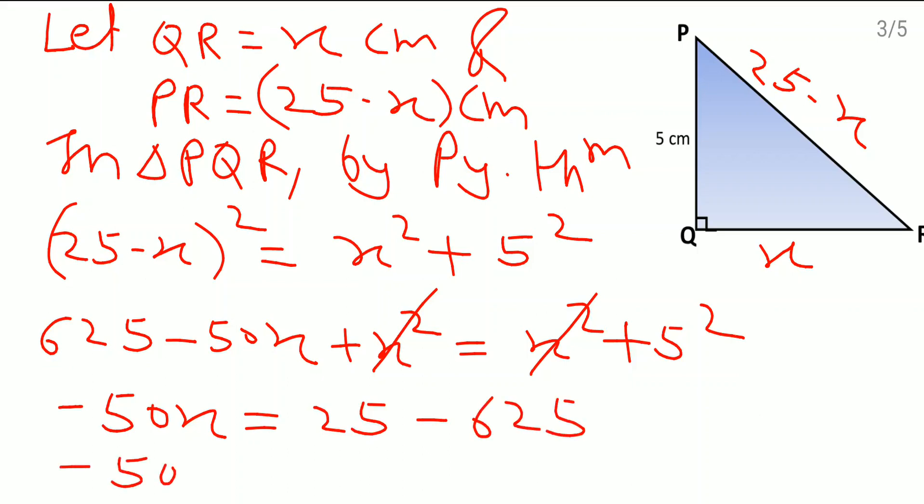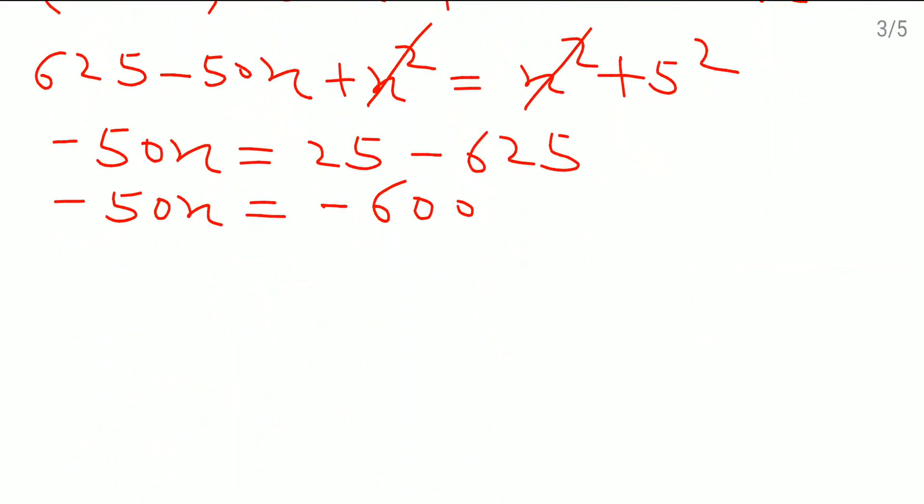Look at this here minus 50X as it is. After doing the subtraction we get here minus 600. Send this minus 50 that side. So X which is equal to minus 600 by minus 50. 0 and 0 got cancelled. This also got cancelled. 5 ones are and 5 twelves are 60. Therefore we got the value of X as 12 cm right.